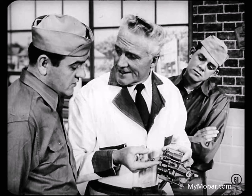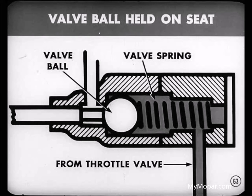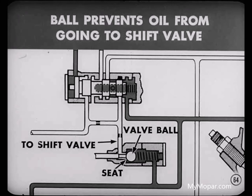In order to make this forced downshift, the power flight transmission is provided with a kickdown valve. How does this kickdown valve operate, Jack? Well, first of all, let's take a look at it. You'll notice that it has a valve ball, a valve spring, and a rod. In all forward speed operating conditions except kickdown, the kickdown valve spring and throttle pressure combine to hold the kickdown valve ball on its seat. As long as the ball is held on its seat, throttle pressure is prevented from going through the kickdown valve to the shift valve.